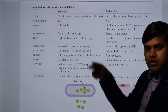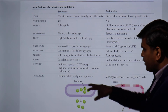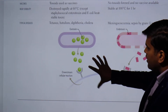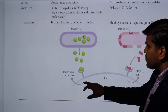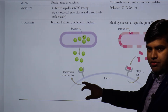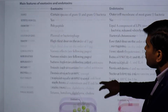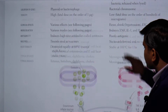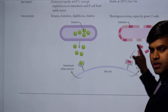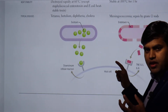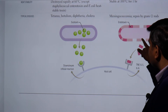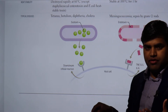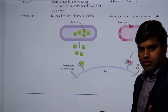Exotoxin is released outside the cell, comes to the host cell, and causes a reaction. Whereas endotoxin is present inside the cell and is released when the cell disintegrates, then comes to the host cell and causes a reaction and disease.